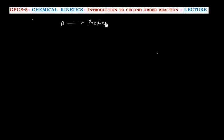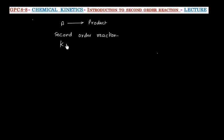In this lecture, we will discuss second order reactions. Let us say we have a reactant A that gives a product, and this is a second order reaction. The rate constant for this reaction is given as k.